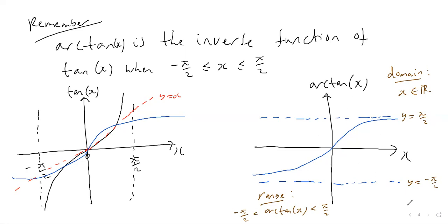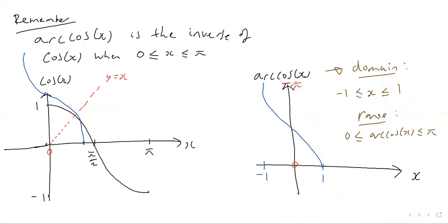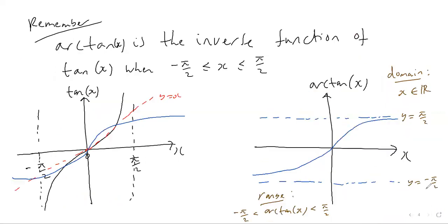So to summarize: the arcsin graph has domain between minus one and one and range between minus pi over two and pi over two. The arccos graph has domain between minus one and one and range from zero to pi. The arctan graph has domain of every real number from minus infinity to infinity, and range trapped between minus pi over two and pi over two.